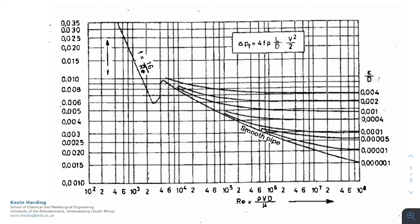On the right-hand side, we have something which says e divided by d. This e is the roughness. In order to determine what the friction is in a pipe, we need to know how rough the pipe is before we can figure out what the friction is.